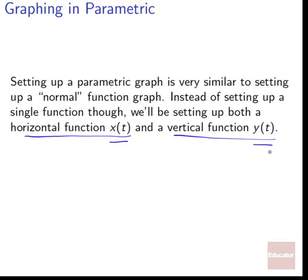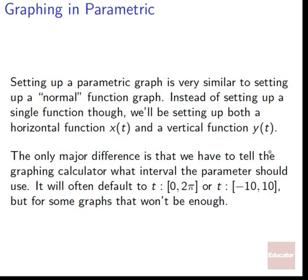So you set each of those up just like you used to set up one function, but now you're setting up how your horizontal part moves and how your vertical part moves. The only major difference is that we have to tell the graphing calculator what interval the parameter should use. It will often default to t going from 0 to 2π, and on some calculators it might default to t going from -10 to 10, but for some graphs that won't be enough.